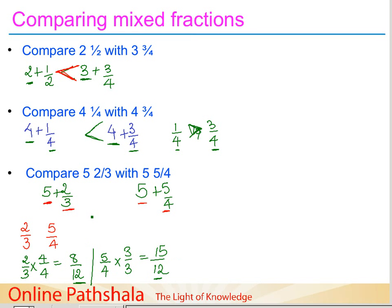Fifteen parts out of twelve is greater than eight parts out of twelve, so five by four is greater than two by three, which means five and five by four is greater than five and two by three. In all three examples, we first compared whole parts, and if those were equal, we applied the logic of comparing like or unlike fractions.